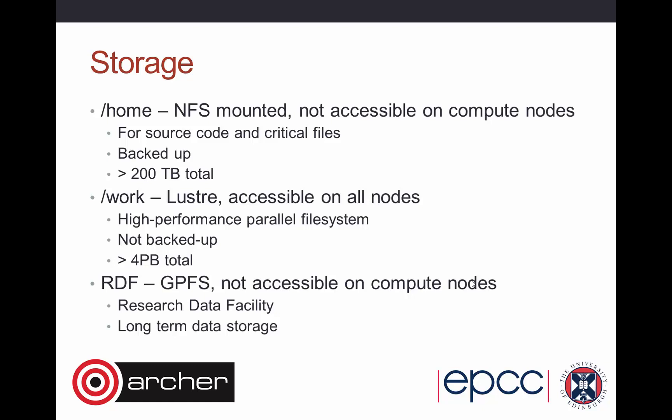The home file system is the standard home file system you log on to — it's not accessible on the compute nodes, but it's for your source code and critical files because it is backed up, with over 200 terabytes of capacity. For actual data storage, we have the slash-work system, which is a parallel file system called Lustre — very high-performance, not backed up, but with a very large capacity of more than four petabytes. For longer-term storage there's the Research Data Facility, the RDF, using IBM GPFS. Typically you store source code on home, do day-to-day running on slash-work, and move files needed long-term to the RDF.